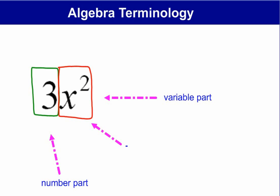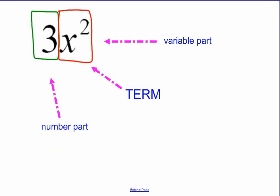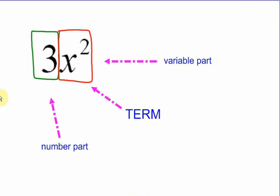And like I said, the whole thing together, a number part with a variable part is called a term. That's a very, very, very, oh how can I stress this, very important word when it comes to algebra. It's what is a term.